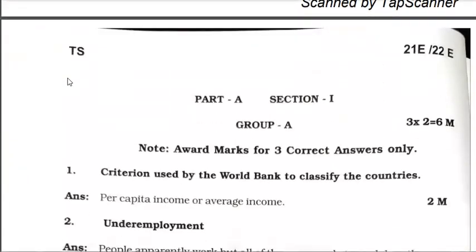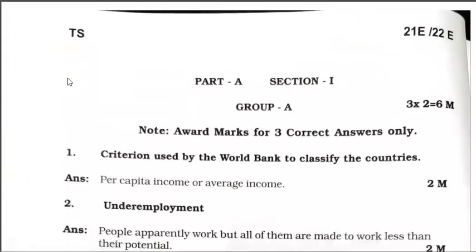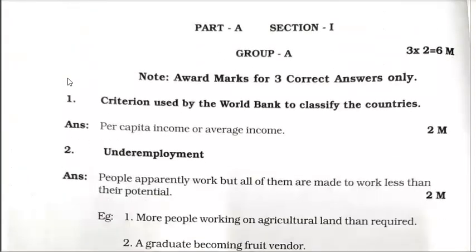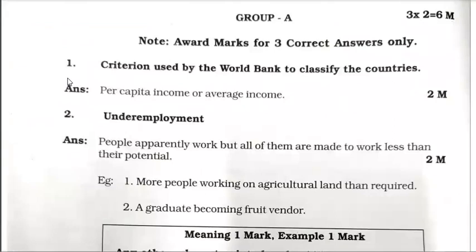From here you can see Section A, Part A, Section 1, Group A. Note: award marks for correct answers for 3 correct answers only. Even if you write answers to all 6 questions, you will get marks for only 3 questions. Keep it in mind. Each question carries 2 marks, so 3 questions give 6 marks total in Group A.